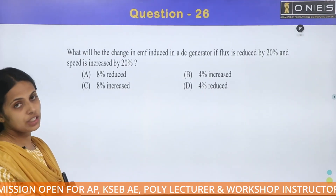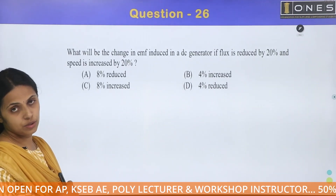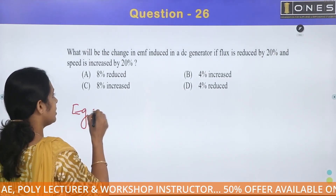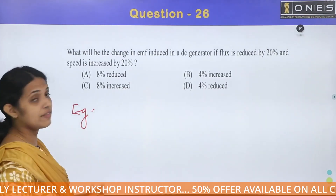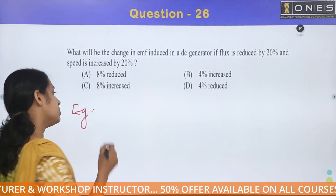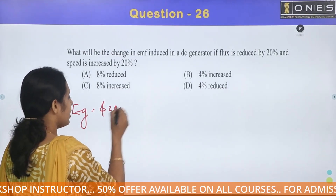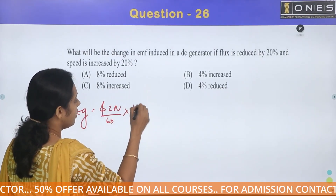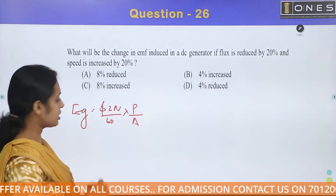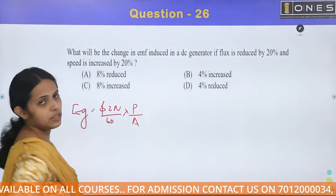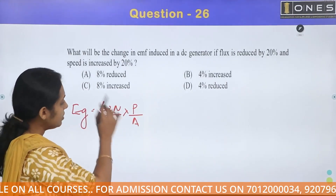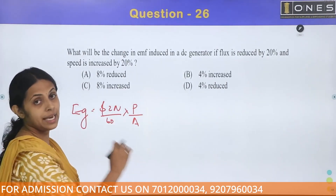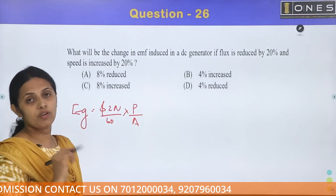We will show the induced EMF change. We need to know the general expression for generated voltage, induced EMF: E = φZN/60 × P/A, where Z is the total number of conductors, N is speed in RPM, P is the number of poles, and A is the number of parallel paths.